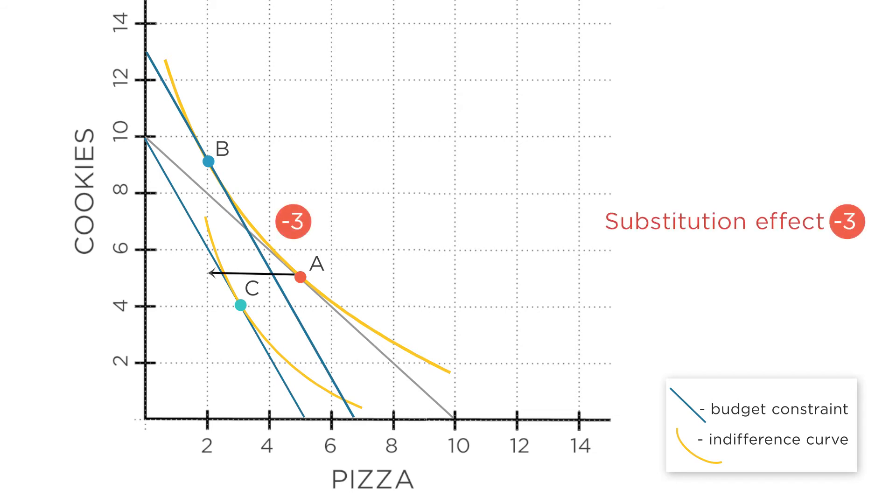But the income effect is the movement from B to C, and that shows an increase in the consumption of pizza. This would therefore be an example of pizza as an inferior good. The substitution effect caused you to consume less, but the income effect went in the opposite direction. You felt effectively poorer, so you consumed more pizza.